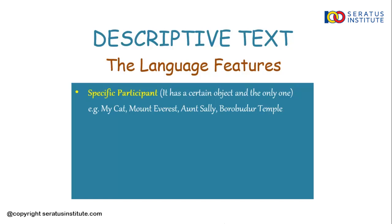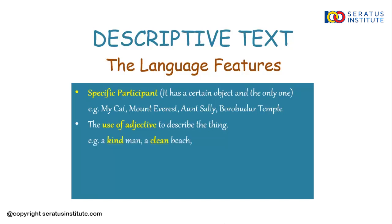Next: the use of adjective to describe a thing. Adjective adalah kata sifat — kita gunakan kata sifat untuk menjelaskan suatu benda, or we use adjective to describe a noun. For example: a kind man, clean beach, a green mountain. The words highlighted in yellow are examples of adjectives: kind, clean, green. If you want to learn more about the use of adjective, you can click the next video.